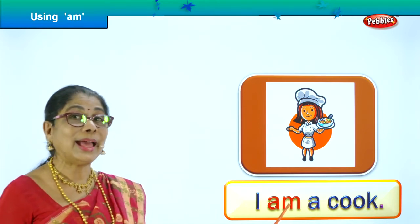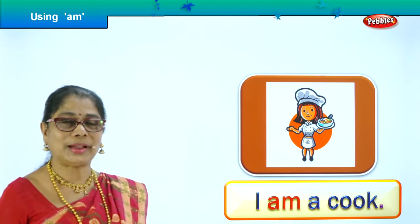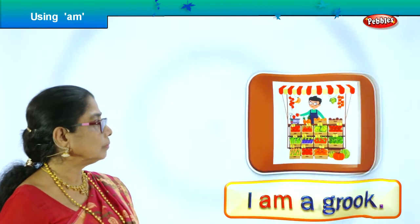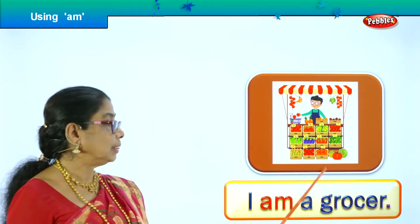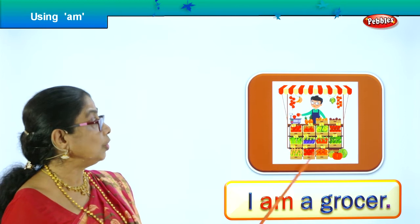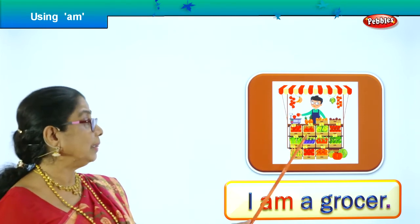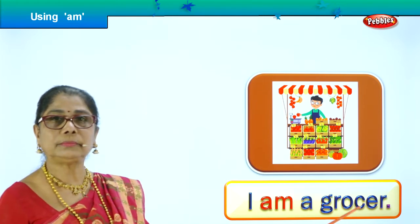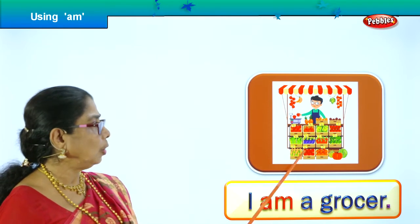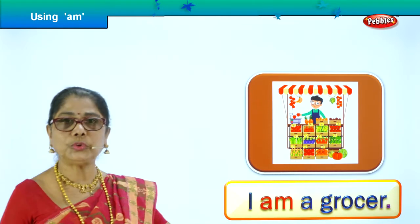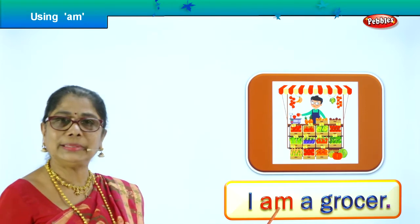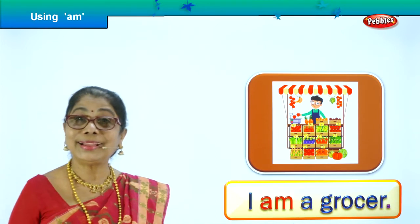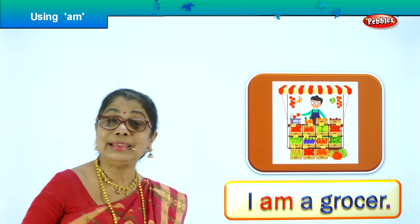We are using 'am' in the sentence, and lots of sentences we have done so far. Let's go to our next picture. Here is a person who sells a lot of things. Who is he? 'Sir, who are you?' He says: 'I am a grocer. I sell all kinds of vegetables and fruits for you.' The use of 'am' in the sentence — 'I am a grocer.' A grocer can be a lady or a man.